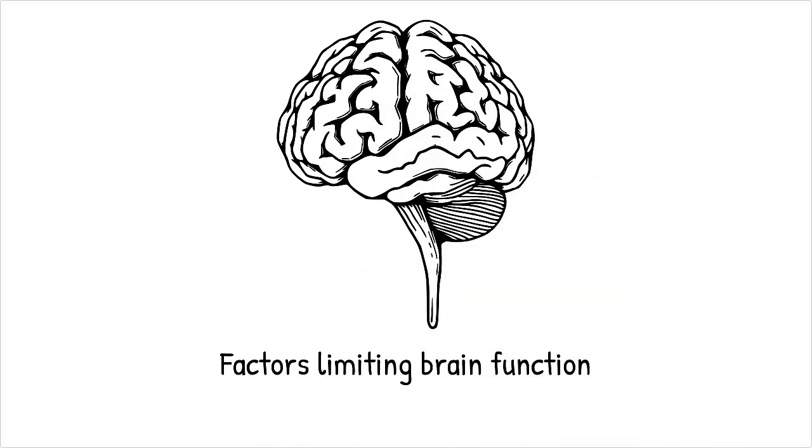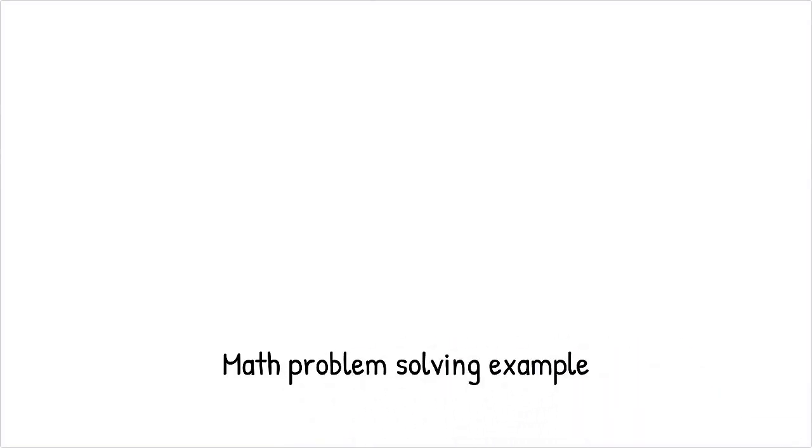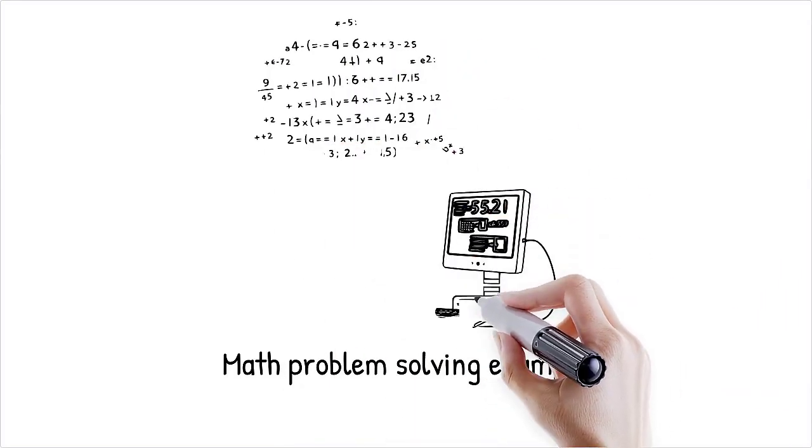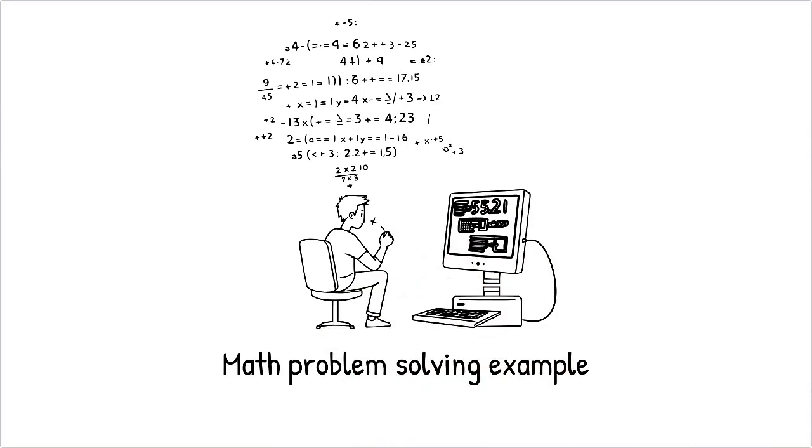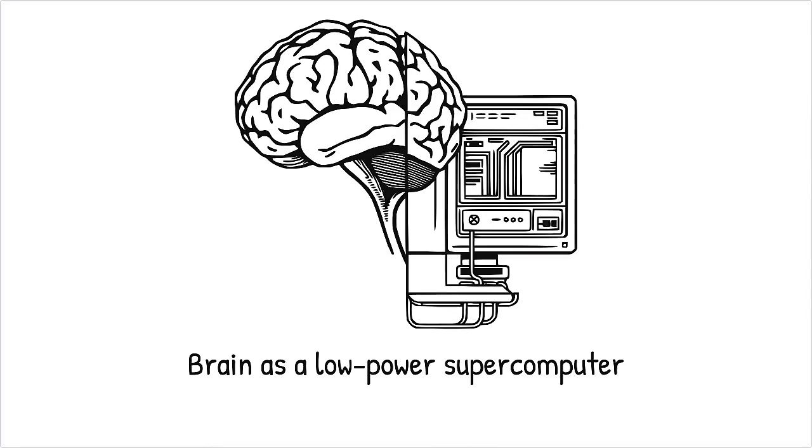A person solving a complex math problem might take minutes, whereas a computer algorithm can do it in milliseconds. The brain is like a low-power supercomputer, capable of deep insights, but constrained by biological energy limits.